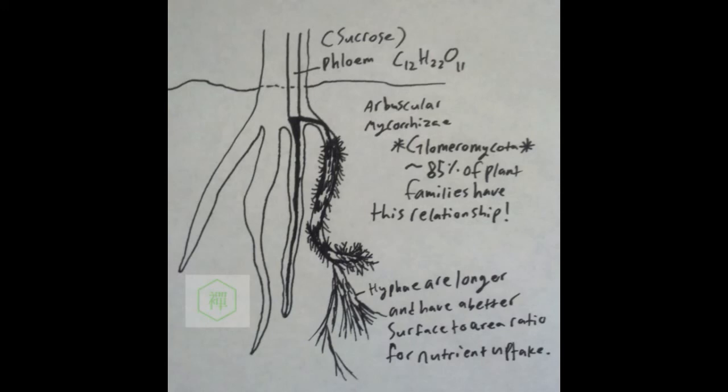So, there are five main classifications of endomycorrhiza: Arbuscular, ericoid, arbitoid, monotropoid, and orchid mycorrhiza. I mentioned that 85% of plant families have an arbuscular-mycorrhiza relationship. Glomeromycota encompasses all arbuscular-forming species of mycorrhiza, and the mycorrhiza that I talked in particular about are arbuscular-forming. Arbuscular mycorrhiza penetrate the parenchyma cortex and invaginate only the cell membrane, but not the protoplasm.